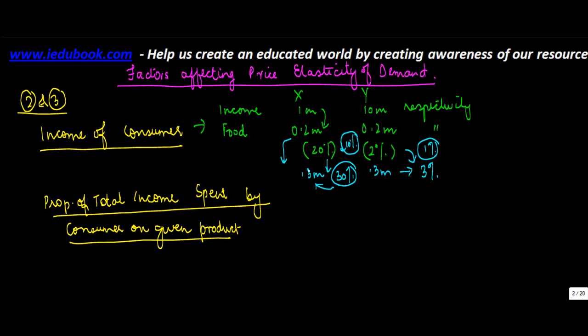Now who is going to be affected more? I mean who is going to spend a bit less on these food items? Obviously X. So we conclude that if income of the consumer is low, then basically the price elasticity of demand is high. So PE in case of X is equal to high.